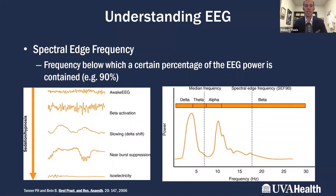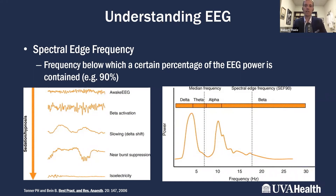In this example on the bottom right, it's at about 17 hertz. Most of the area under the curve — 90% of the area under the curve — exists below 17 hertz. As that EEG waveform changes and it gets more high or low frequency power, that spectral edge frequency will change.